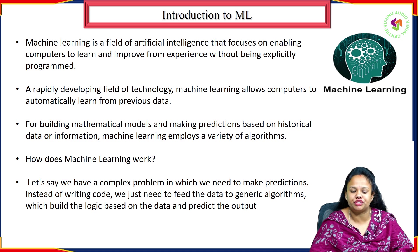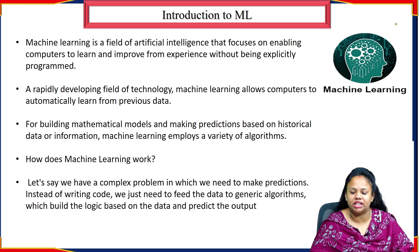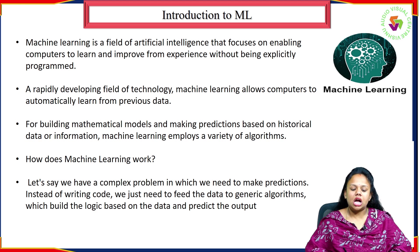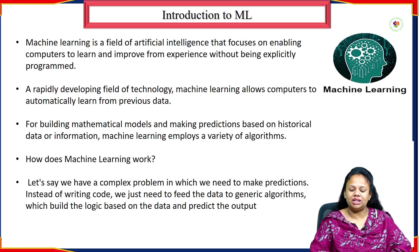This is a developing field of technology. Machine learning allows computers to automatically learn from previous data, building mathematical models and making predictions based on historical data or information. Machine learning employs a variety of algorithms. How does machine learning work? Let's say we have a complex problem where we need to make predictions. Instead of writing code, we just need to feed the data to generic algorithms, which build the logic based on the data and predict the output.